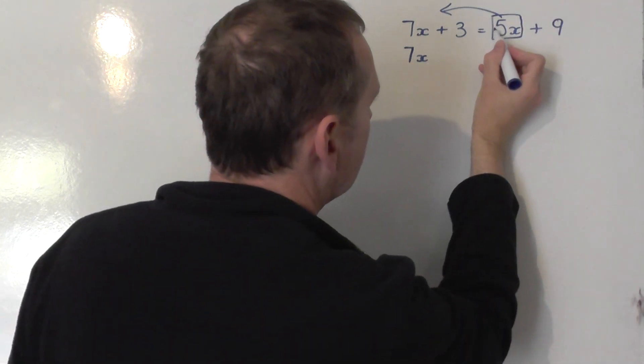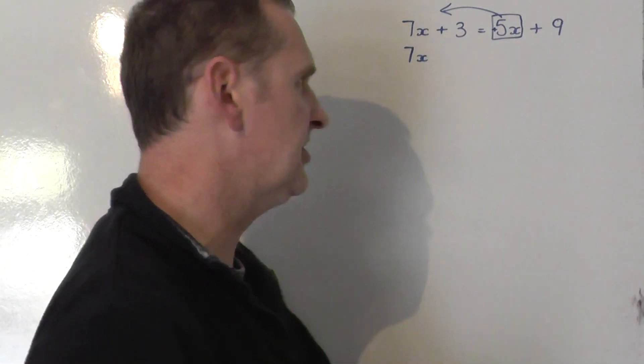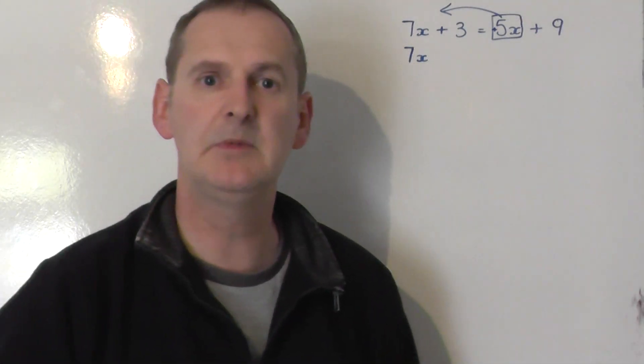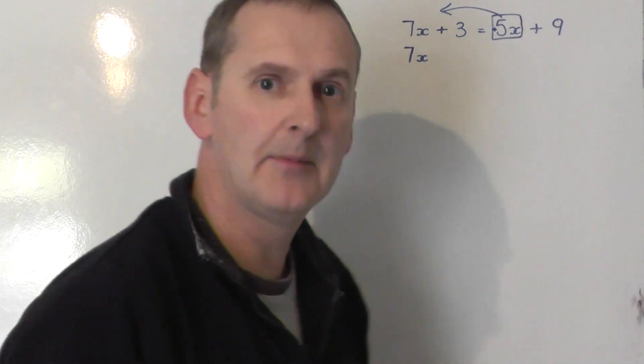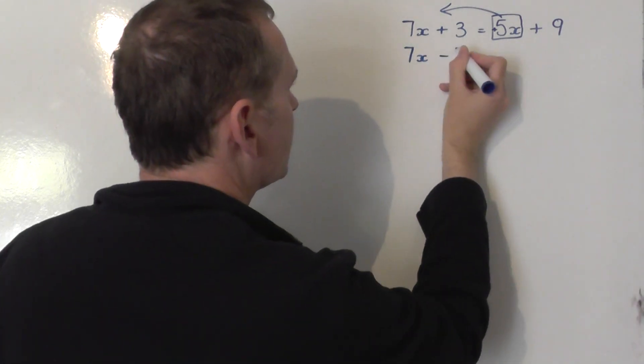Now, currently, there is a plus in front of that 5x. You can't see it, because it's just written as 5x, but it means plus 5x on the right-hand side. Take it to the left, that plus 5x becomes a minus 5x.